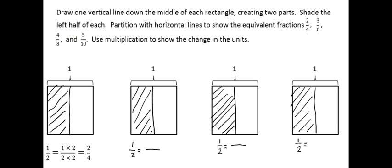Now we're going to look at equivalent fractions on a fraction model. This question says draw one vertical line down the middle of each rectangle, creating two parts. I've already done that portion of the problem. Shade the left half of each. You can see I've also shaded in the left half of each fraction model. Partition with horizontal lines to show the equivalent fractions 2/4, 3/6, 4/8, and 5/10. And then we're going to use multiplication to show how this changes the unit in each model.